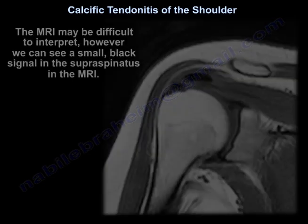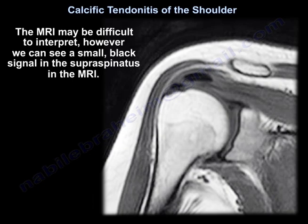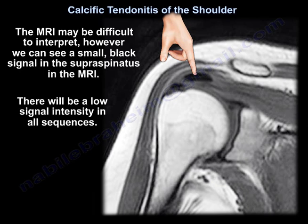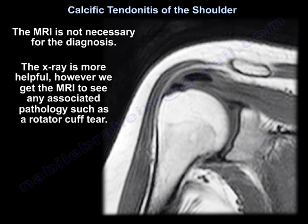The MRI may be difficult to interpret. However, we can see a small black signal in the supraspinatus on MRI, and there will be low signal intensity in all sequences. The MRI is not necessary for the diagnosis — the X-ray is more helpful. However, we get the MRI to see any associated pathology, such as if the patient has a rotator cuff tear.